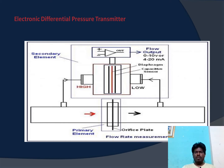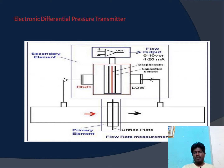The function of any electronic transmitter is that it gives the output in a standard signal, that is 4 to 20 milliampere. For that, there are basically two sections: one is for the sensing and the second is for the signal conditioning system. Here I am particularly talking about the DP cell, also called a differential pressure transmitter.